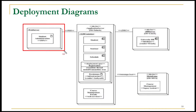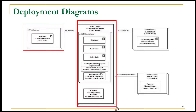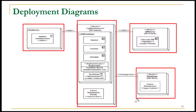Here in this example we have a node called web server, then a device node representing the application server where our application is hosted. The application server is communicating with the database server, and there is another server — the mainframe server — communicating with the application server. Within the application server we are showing course management and web services — a couple of web services running on the application server. We are also showing an EJB container, which is a Java-specific technology used to host servlets and beans. The internal representation of the EJB container shows different components including the student component, seminar component, schedule component, and other application details.